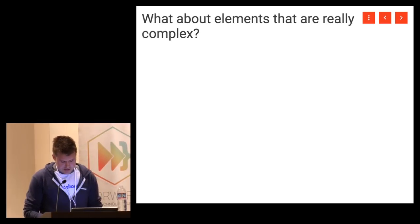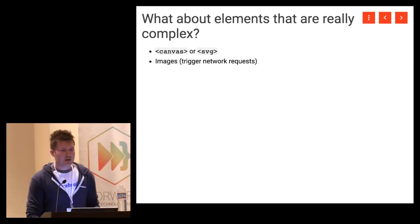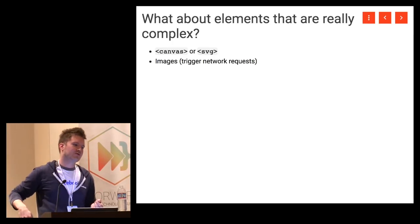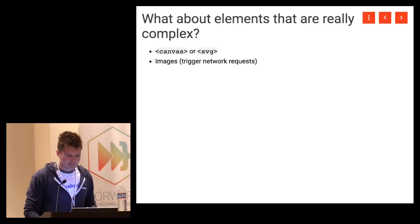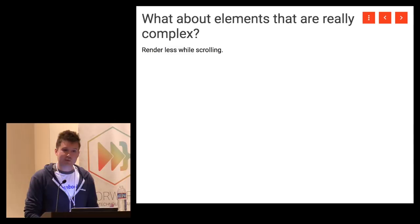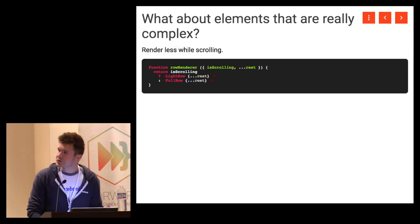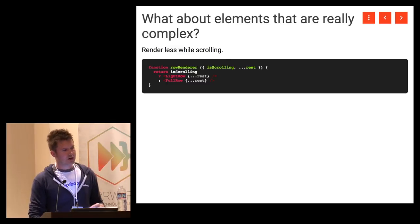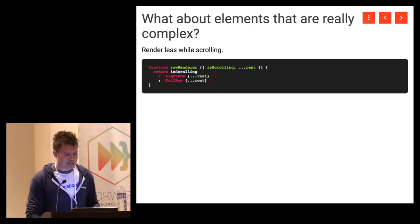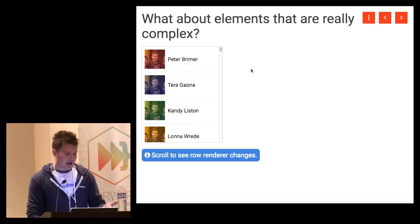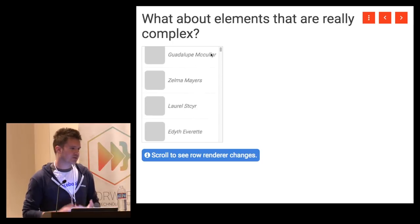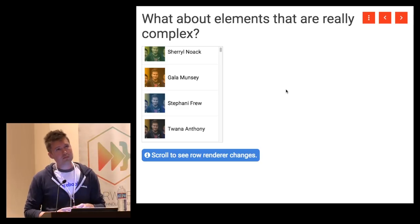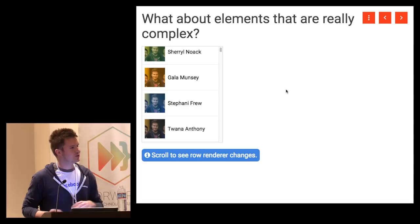A concern you might have is: what if my individual items are really heavy — big canvases, SVGs, or images? You don't want a windowed list where a fling scroll sends off 500 HTTP requests to load images the user won't even see by the time they stop scrolling. My suggestion is to render less while scrolling. React Virtualize passes a parameter called isScrolling to your row renderer, and you can use that to render a lighter weight view. For example, with a list of people with images, you show a placeholder image while scrolling and load the real image as soon as scrolling stops. This can be a big win for both performance and data usage for mobile users.